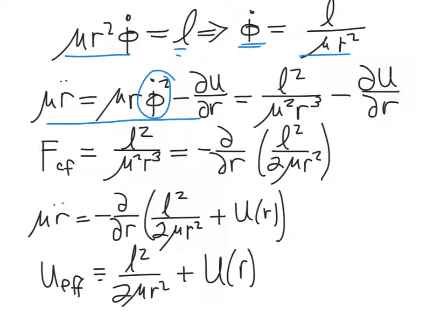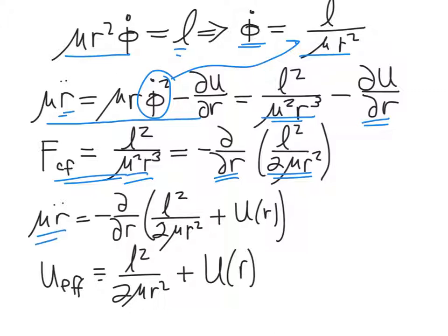We can replace phi dot with L over mu r squared, and so we get that mu r double dot equals L squared over mu squared r cubed, minus the partial derivative with respect to r of the potential energy. This L squared over mu squared r cubed is in fact the centrifugal force. That wants to drive the two particles apart as they're revolving around one another — it represents a force that acts outward, pushes the particles apart, and tries to increase r. We can write that expression as the negative partial derivative with respect to r of a centrifugal potential function.